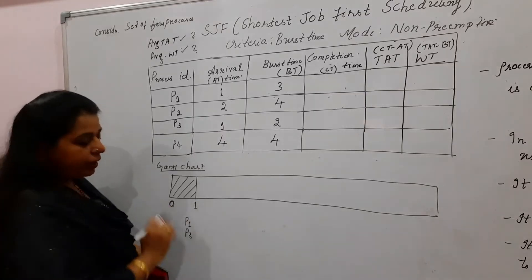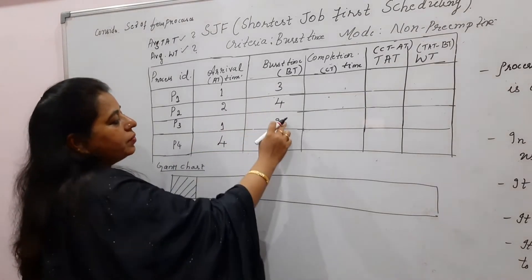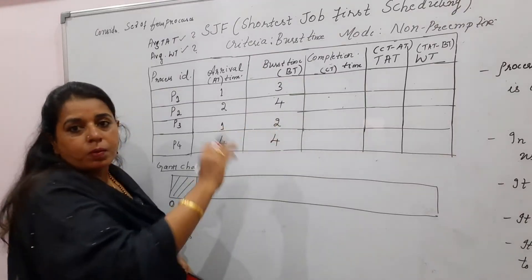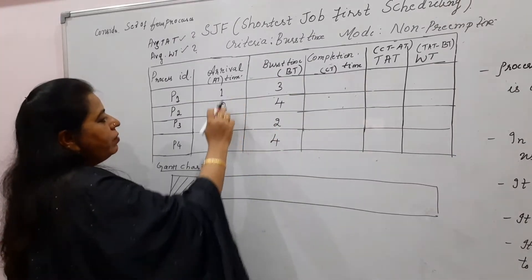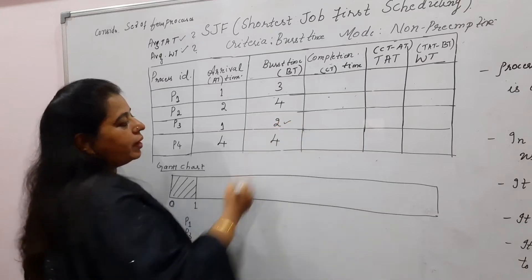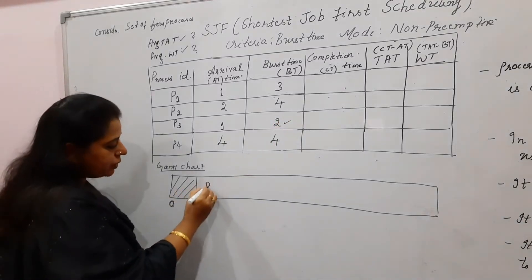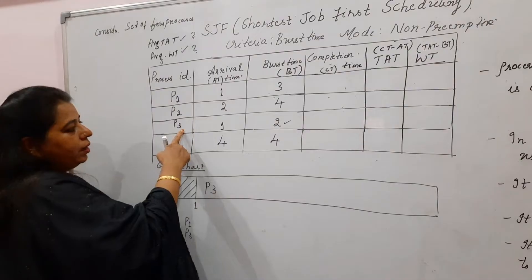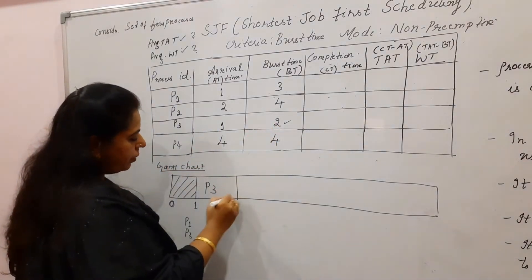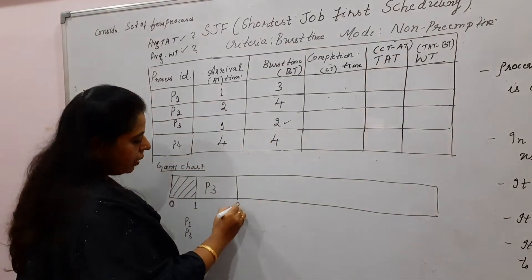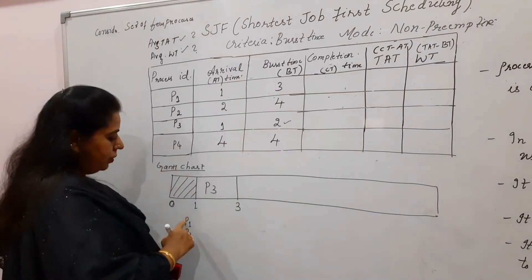These two processes are available at time 1. We select the process with the smaller burst time. Among P1 and P3, the smaller burst time belongs to P3. So we schedule P3 first. P3 needs 2 units of time, so it will complete its job at time 3.